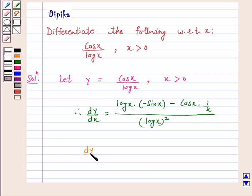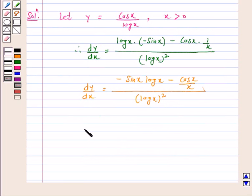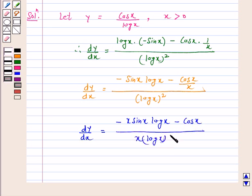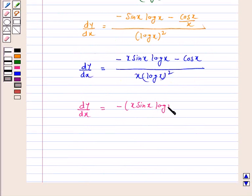dy by dx is again equal to minus sin x log x minus cos x upon x, upon log x whole square. And this is again equal to minus x sin x log x minus cos x upon x log x whole square. And this is again equal to minus x sin x log x plus cos x upon x log x whole square.